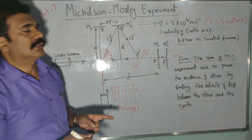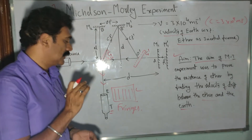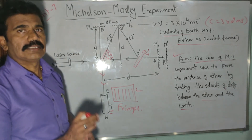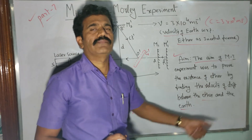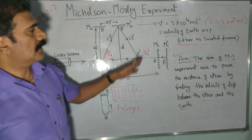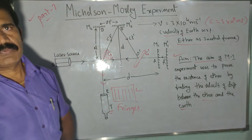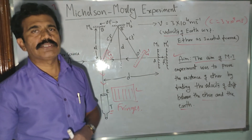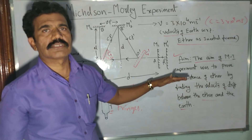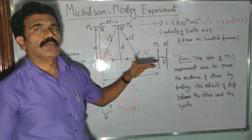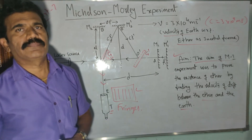After rotating through 90 degrees, fringes are formed again and compared to the original. Theoretically, some fringe shift is expected. If the same fringe shift is observed experimentally, we can say that ether exists in space. If no fringe shift occurs, the experiment gives a negative result — meaning our concept of earth's motion with respect to ether is wrong, and we can say ether does not exist.